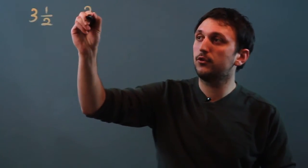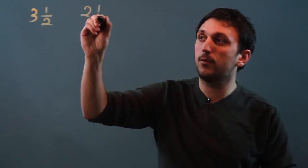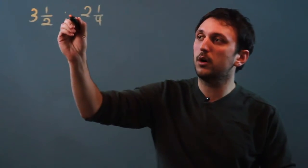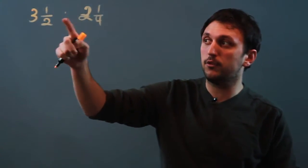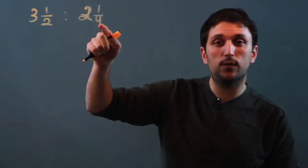Let's take two mixed numbers. We have three and a half and we have two and one-fourth. So let's say we want to have these as a ratio three and a half to two and one-fourth.